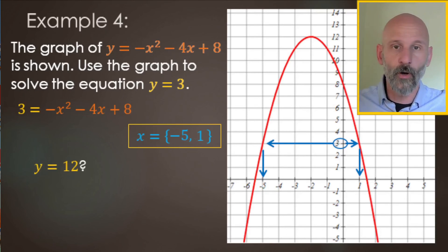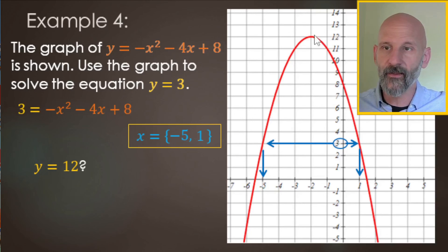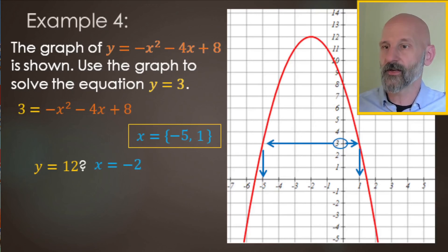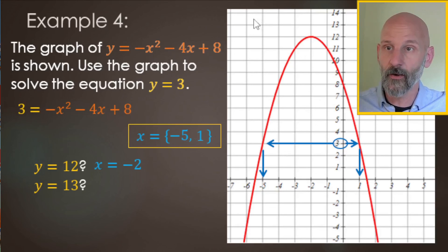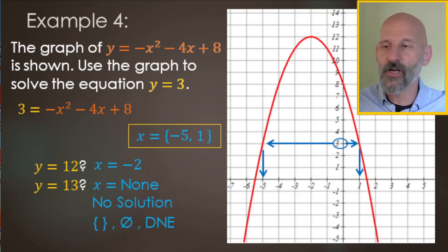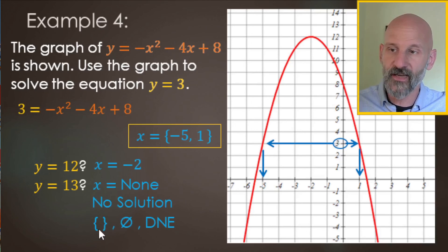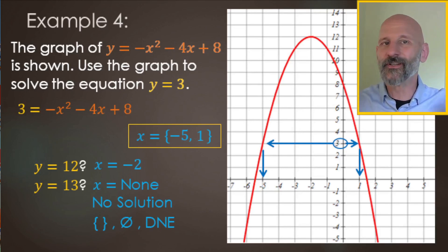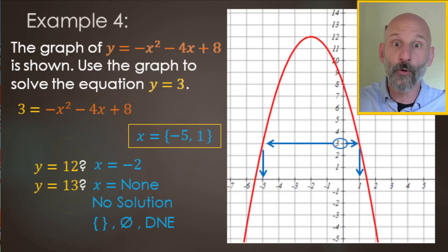Bonus questions: when y equals 12, the graph only touches that height at x = -2, giving one answer. When y equals 13, the graph doesn't even reach that height — it's above the maximum. So the answer is no solution, which can also be written as the empty set or DNE (does not exist).